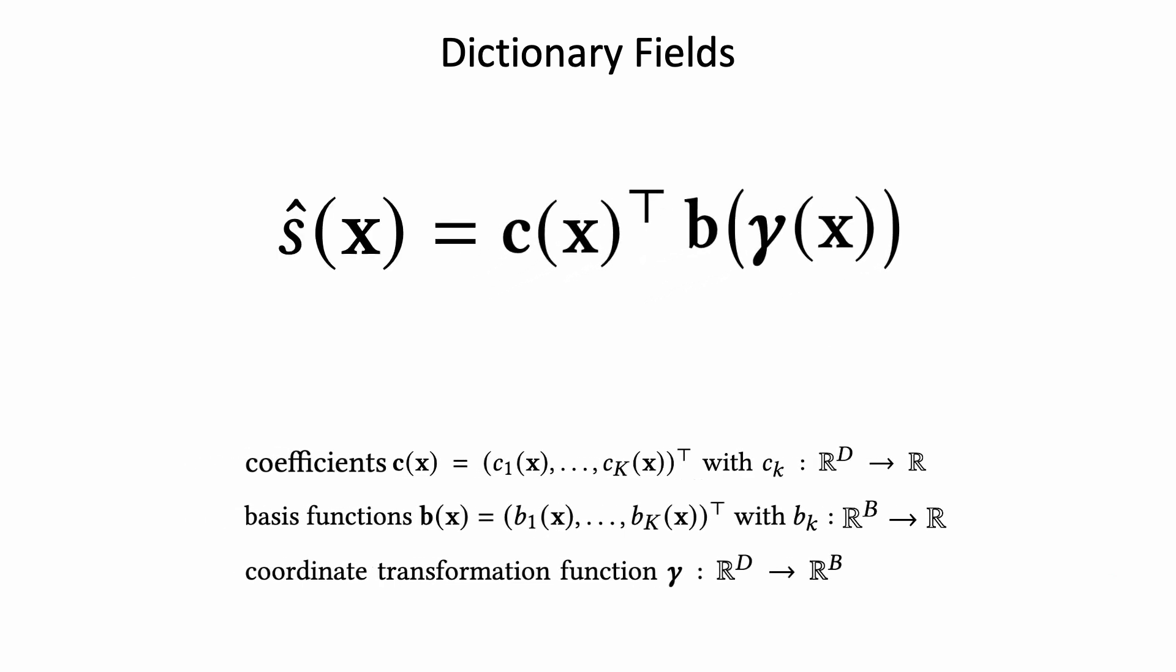However, the linear representation significantly limits the model's capability and many signals have more than a single dimension. For example, 3 in the case of RGB images, or 4 in the case of radiance fields. We further generalize our model to Q-dimensional signals by introducing a projection function P.